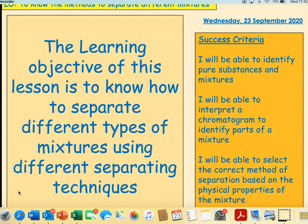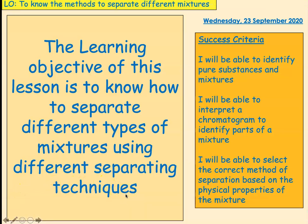The learning objective of this lesson is to know how to separate different types of mixtures using different separating techniques. What we're going to hopefully be able to do is to identify the difference between a pure substance and a mixture. I want you to be able to interpret a chromatogram and to be able to identify parts of each of the mixtures. And I'd like you to be able to select the correct method of separation based on the physical properties of the mixture.